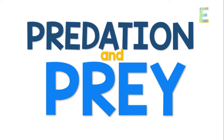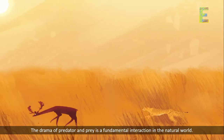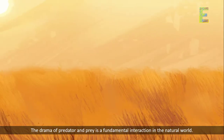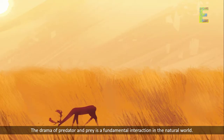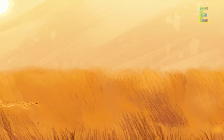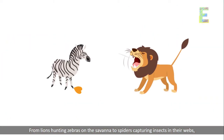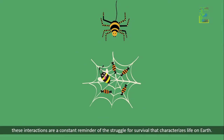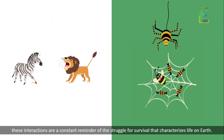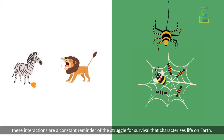Predation and Prey. The drama of predator and prey is a fundamental interaction in the natural world. From lions hunting zebras on the savannah to spiders capturing insects in their webs, these interactions are a constant reminder of the struggle for survival that characterizes life on Earth.